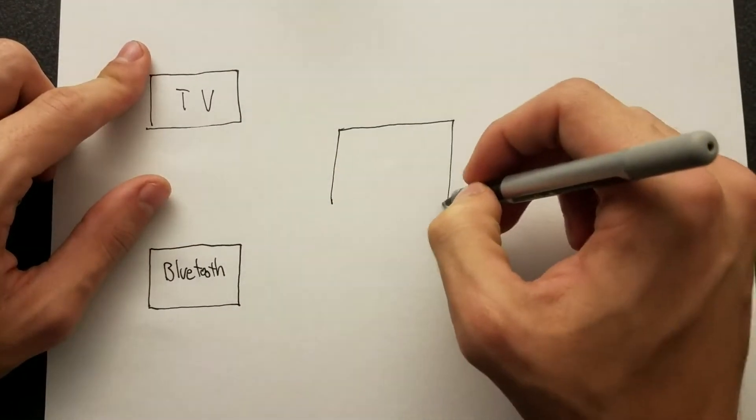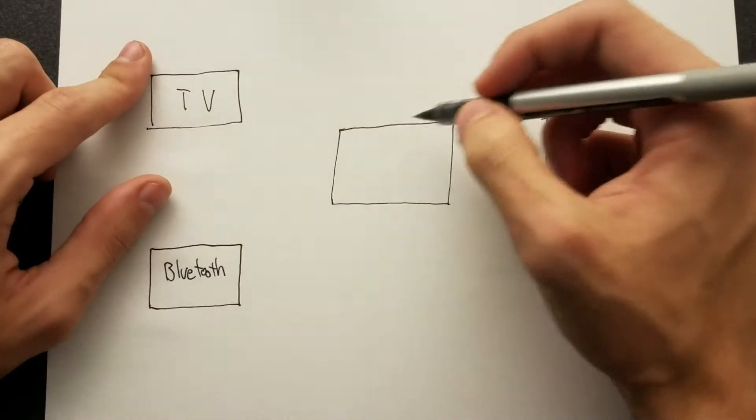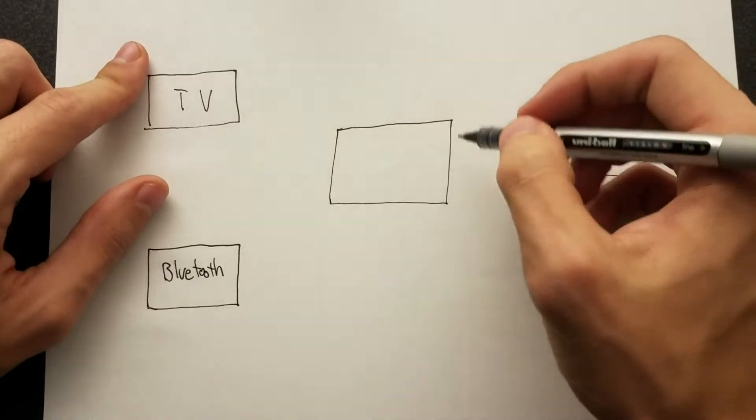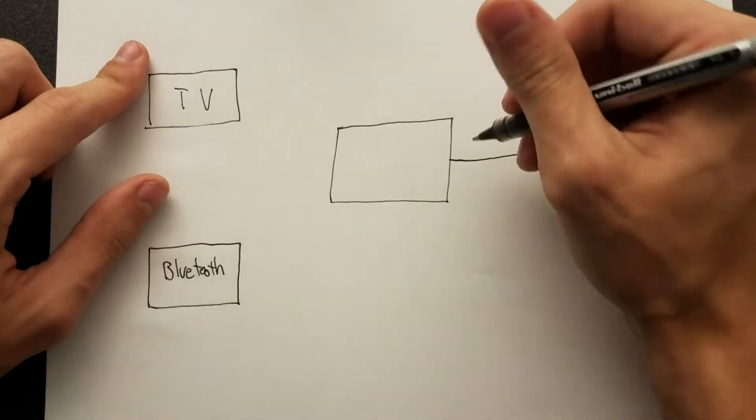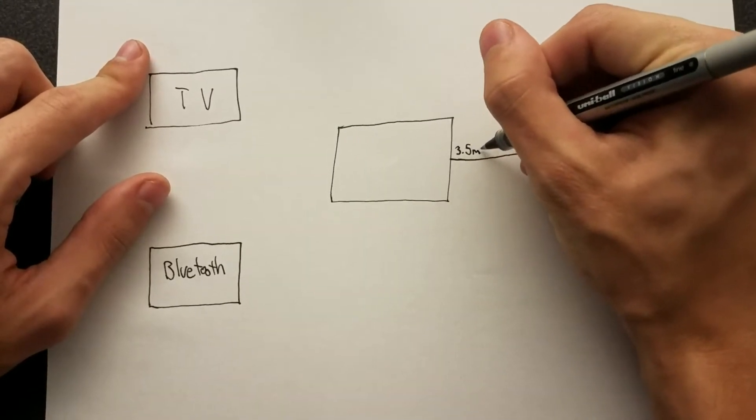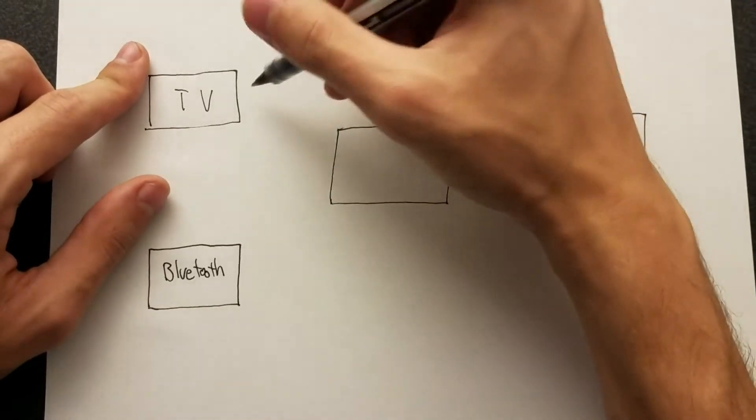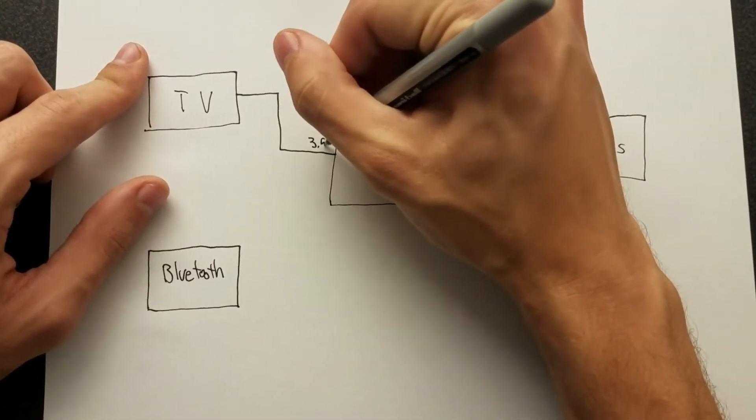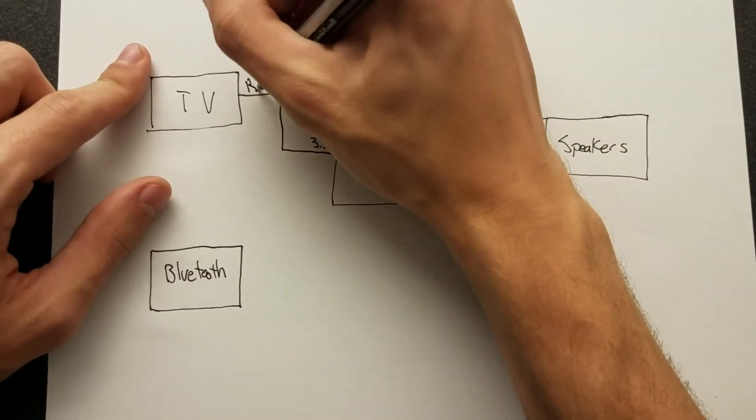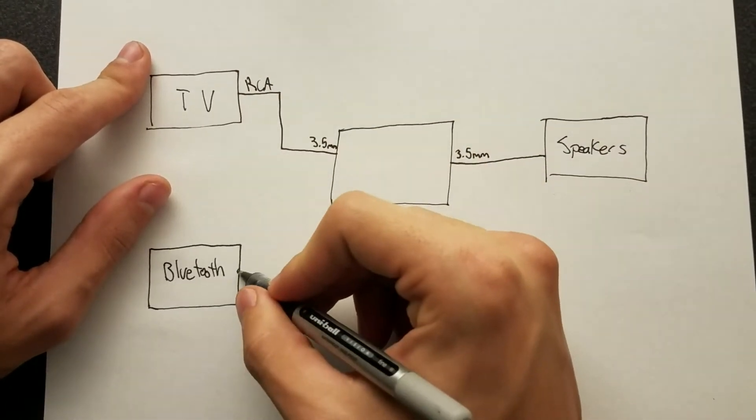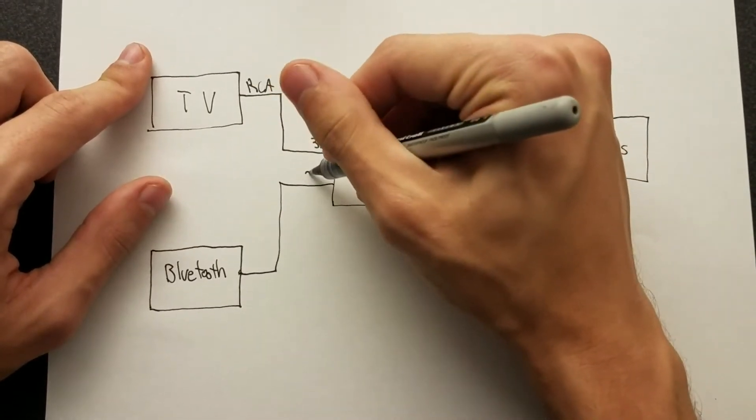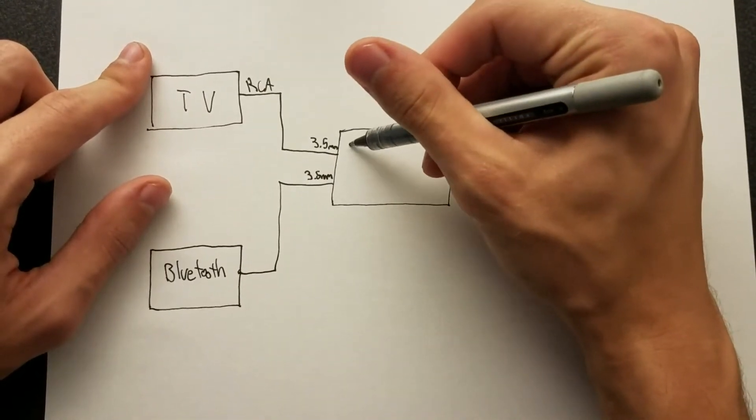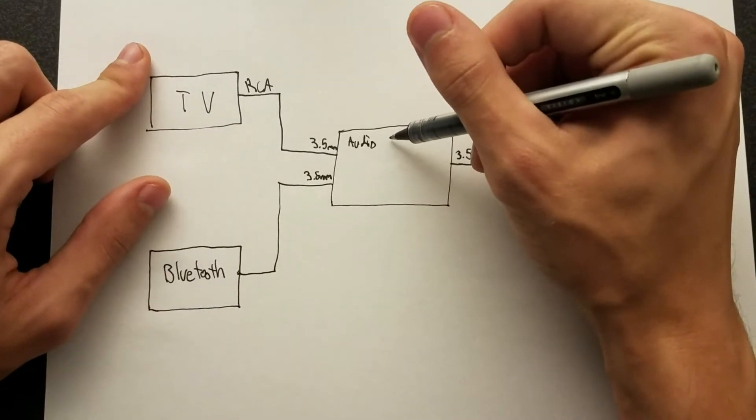So we're going to build some kind of black box here. This basically represents something that we don't know the implementation of, but we want to know what its function will be. So it'll have an output that goes to the speakers, and that'll be 3.5 millimeter, basically a headphone jack. Then the TV will be RCA to 3.5 millimeter, and the Bluetooth will be 3.5 millimeter to 3.5 millimeter. And then this black box will be able to switch the audio signal from one source to the other.